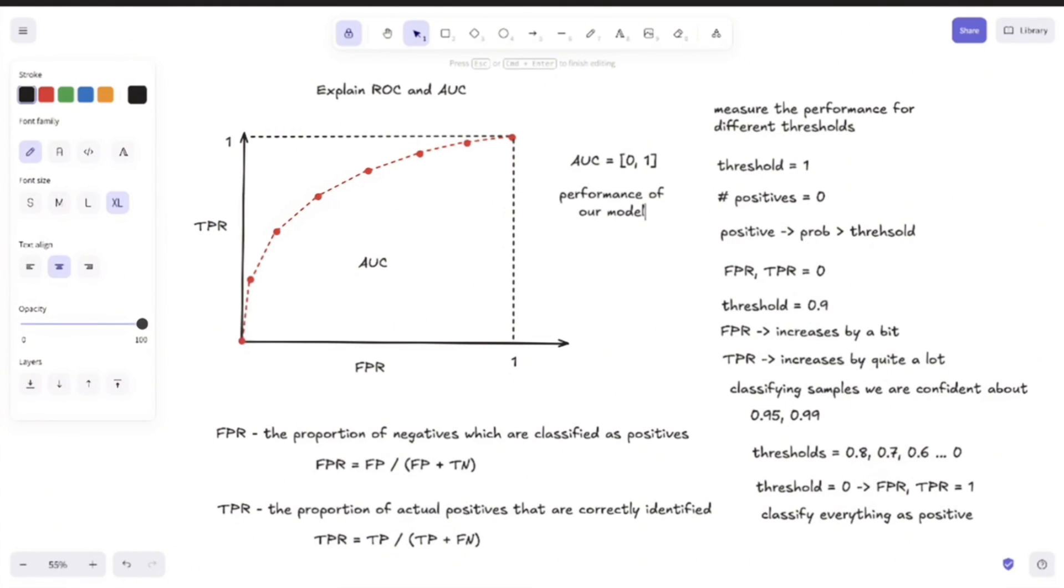Now, there are two important values, I would say. So the first one is when you obtain an area under the curve equal to 0.5. And on this graph, it would look something like this blue line here. Well, in this case, our model is no better than random sampling. And everything below this line means that our model is very bad and something is wrong with it.